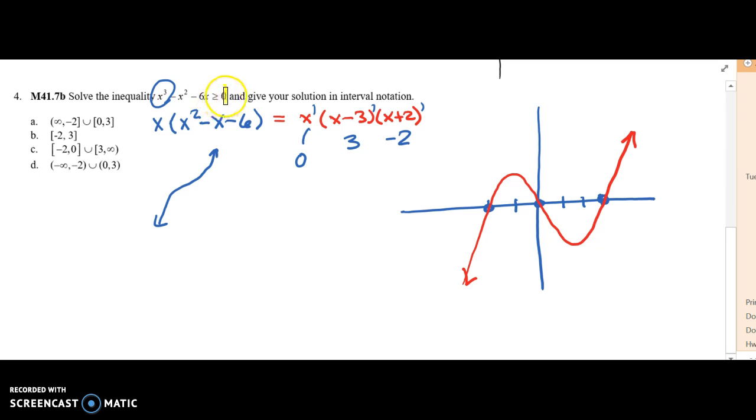I want to know when this graph is greater than or equal to 0. I'm highlighting the portions that are greater than or equal to 0.